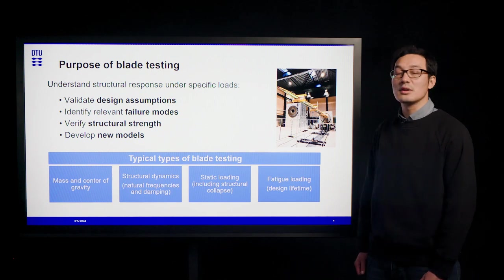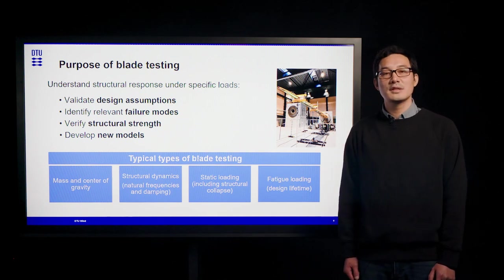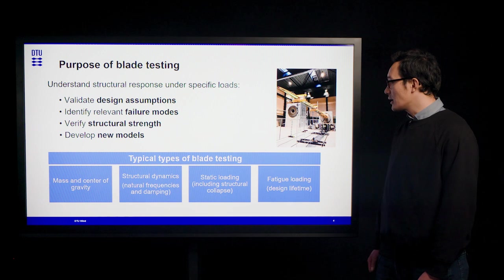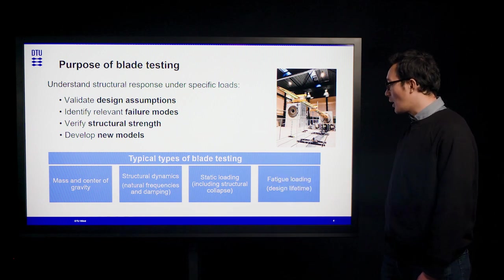Typically, there are four types of blade testing. The first type is the test to determine mass and center of gravity. The second type is structural dynamics testing, in which the natural frequencies and damping ratios can be determined. Those two types of tests give a first indication of whether the blade is manufactured according to the design. We also have two types of tests that use loads: static loading and fatigue loading.